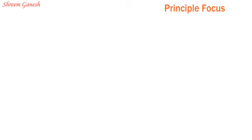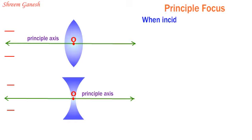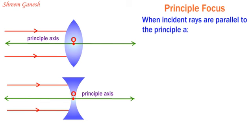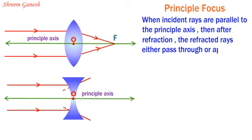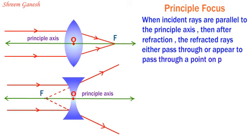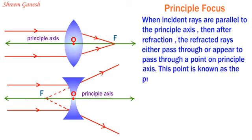Principal focus: When incident rays are parallel to the principal axis, then after refraction, the refracted rays either pass through or appear to pass through a point on the principal axis. This point is known as the principal focus. It is denoted by the letter F.